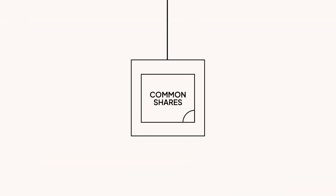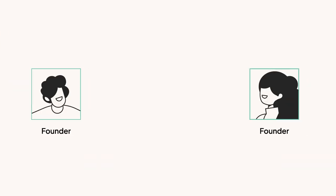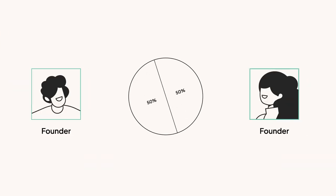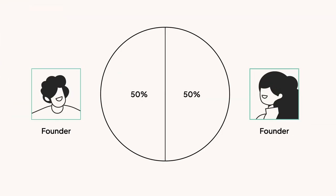Common shares are the most basic, fundamental type of ownership in a private company. They're typically given to two groups: founders and employees. On the founder side, you'll generally see founders grant common shares to themselves when they form the company. In the case of multiple co-founders, the co-founders typically reach an agreement about what percentage of ownership each founder is going to receive — for example, 50-50, 70-30, 60-40, et cetera, to reflect their contributions.